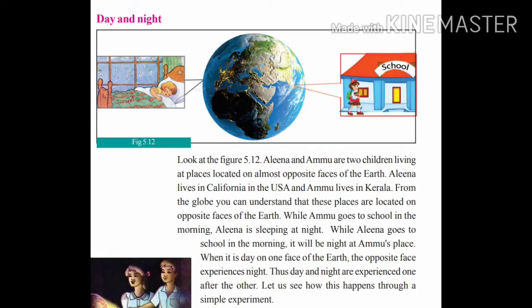Now, study picture 5-12. Alina and Ammu are two children living at places located at almost opposite faces of the earth. One is in the USA and the other is in Kerala. When Ammu experiences daytime and goes to school, Alina is sleeping. You should understand that when it is day on one part of the earth, the opposite part experiences nighttime.